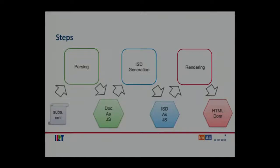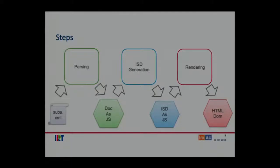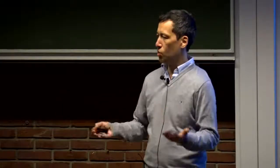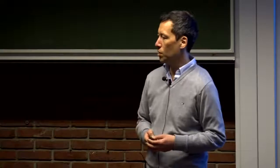What are the process steps of IMSC.js? First, it needs to be parsed. It will be translated into an object model — you have the document as one object model. Then from that object model, for every point in time of the playtime of the video, you can generate a presentation — a static presentation of the subtitles. It is called ISD. And at the end, you want to render it out somewhere. I'll look at rendering it out to HTML, so that you generate an HTML document fragment from the ISD.